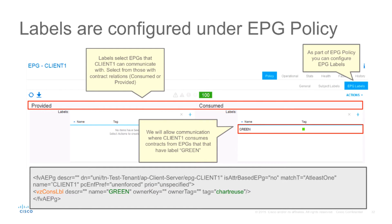Labels can be configured under the EPG policy tab in the EPG label section of the GUI. In this example for a client EPG we have consume contracts with other EPGs, and we will be able to communicate with those EPGs that we consume contracts from if they have label green. This is the XML representation of the same configuration where we see the consume label with name green and the tag matching this particular color code.